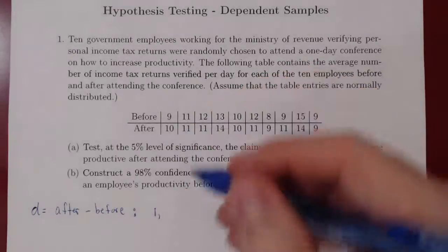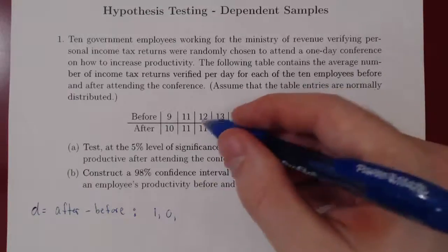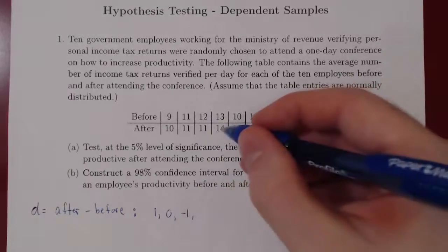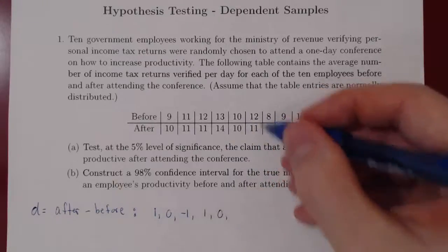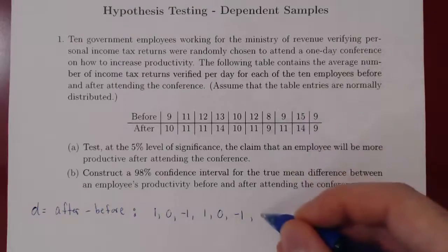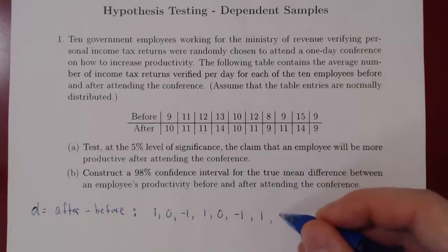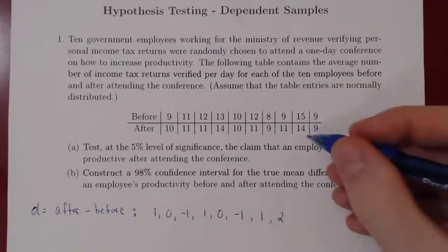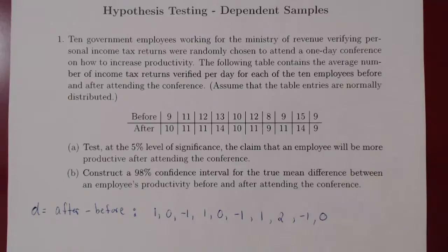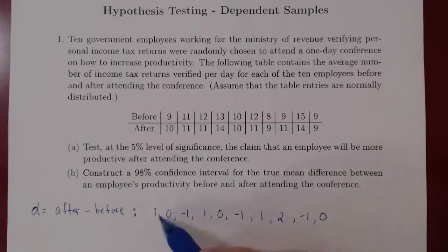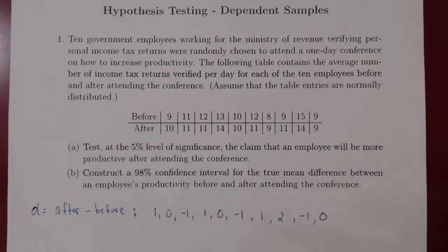The second difference: 11 minus 11 is 0. Third difference: 11 minus 12 is negative 1. Then 9 minus 8 is positive 1; 11 minus 9 is positive 2; 14 minus 15 is negative 1; 9 minus 9 is 0. So now we have our 10 differences for each employee — the difference between the after and the before scores.